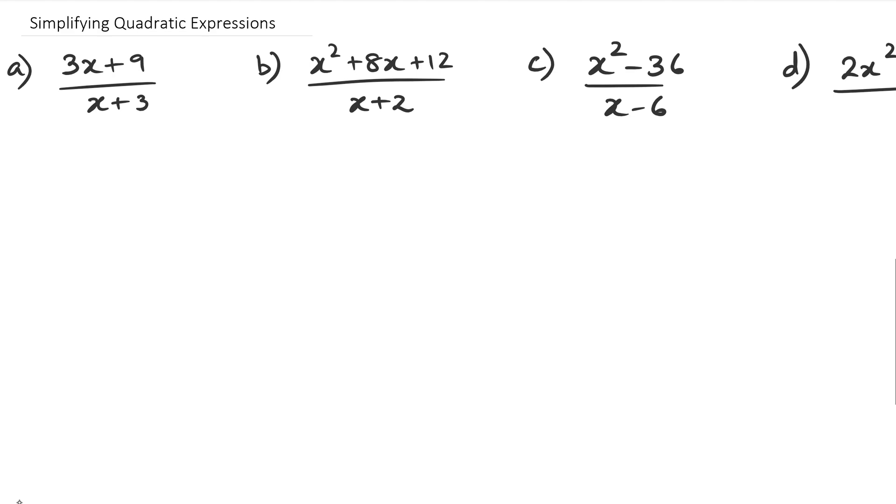So in the numerator right now, I can see that 3 is a common factor. So if I take out 3 as a common factor, I end up with X plus 3. And then in the denominator, I have X plus 3. So now what I can do is treat the X plus 3 in the denominator as one single number. And when I do that, I can cancel out my X plus 3s, which gives me a final answer or simplified answer of 3.